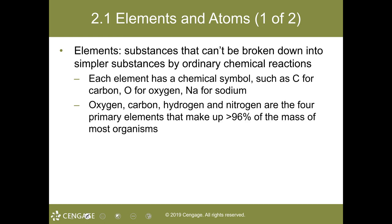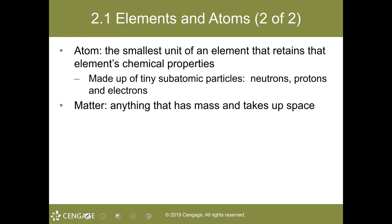The atom is that smallest portion of an element that retains its chemical properties. Atoms are composed of even smaller parts called subatomic particles. Those subatomic particles are known as the proton, neutron, and electron.